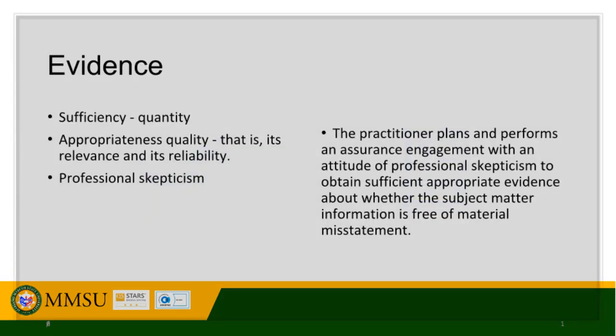The practitioner plans and performs an assurance engagement with an attitude of professional skepticism to obtain sufficient appropriate evidence about whether the subject matter information is free of material misstatement. Sufficiency is the measure of the quantity of evidence. Appropriateness is the measure of the quality of evidence — that is, its relevance and its reliability. An evidence must be both sufficient and appropriate. Merely obtaining more evidence may not compensate for its poor quality. An attitude of professional skepticism means the practitioner makes a critical assessment, with a questioning mind, of the validity of evidence obtained, and is alert to evidence that contradicts or brings into question the reliability of documents or representations by the responsible party.